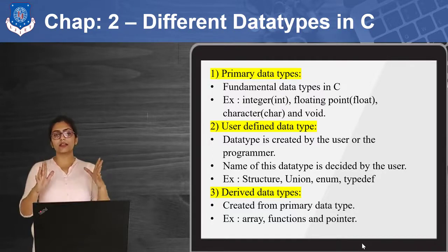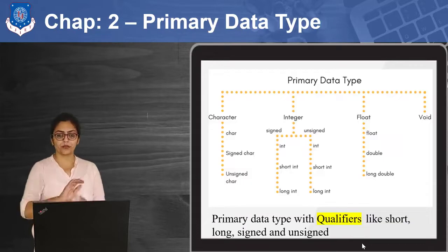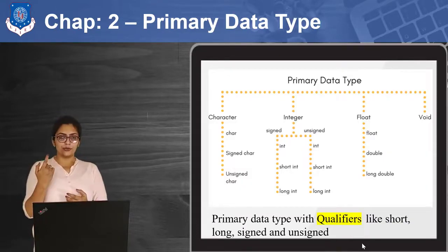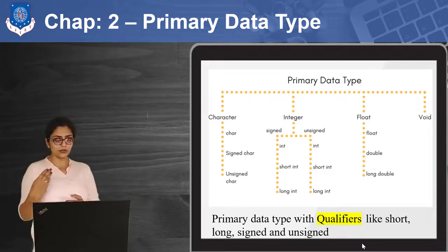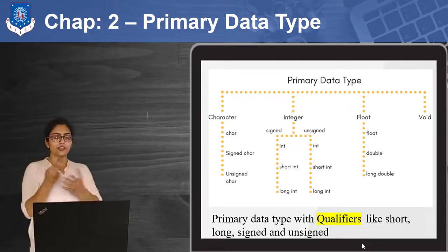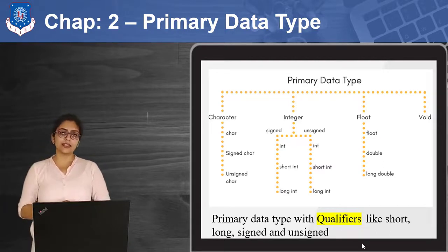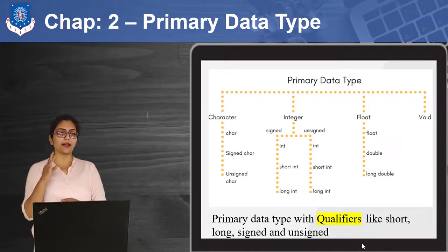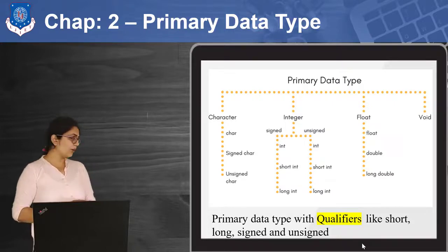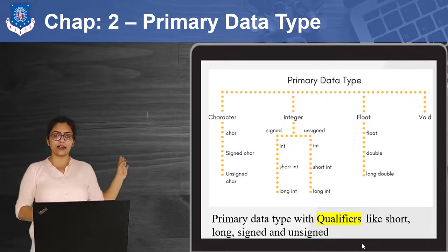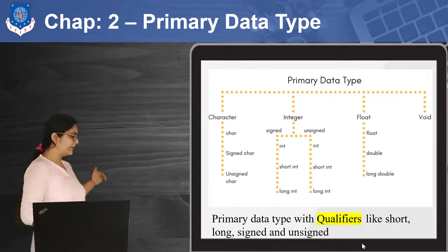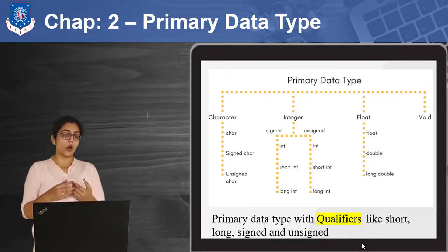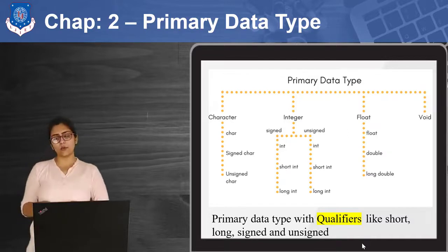Now, what are these primary data types? First is character, second is integer, third is float, and last but not least is void. Void means nothing. The primary data type can be further divided into four parts: character, integer, float, and void. These are also further divided using some qualifiers — that is long, short, signed, and unsigned.